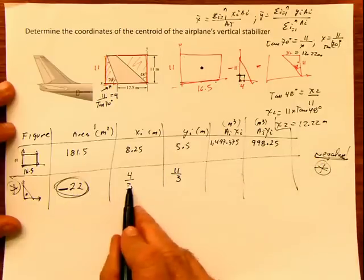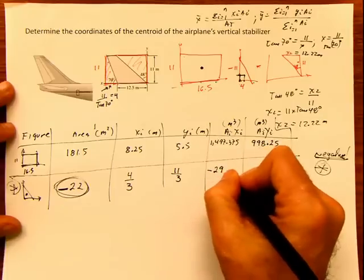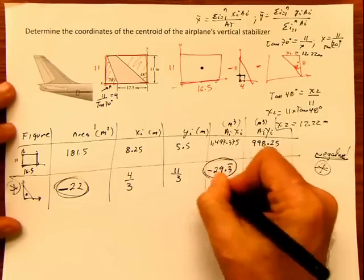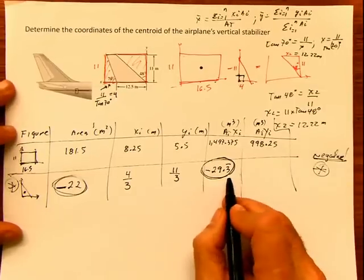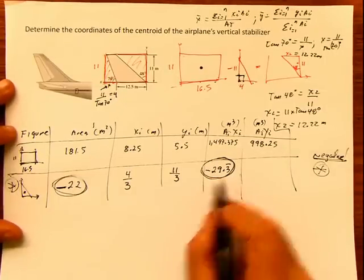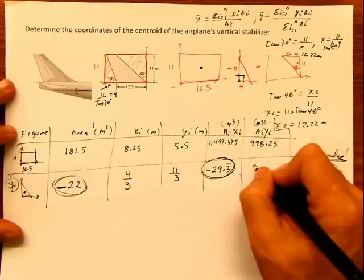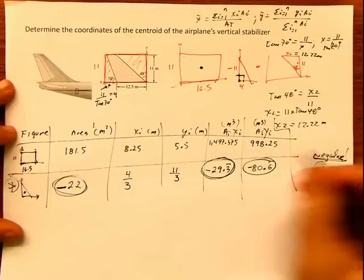This times this is negative 88 thirds, which is negative 29.3 periodic negative. I'm putting the negatives in such a way that I don't forget they are negatives. This times this now, that's 80.6 periodic negative. Done with figure two.